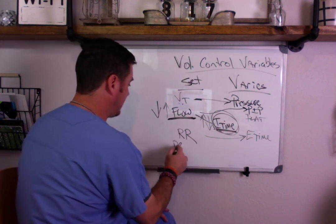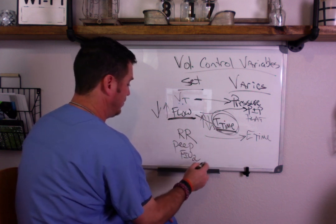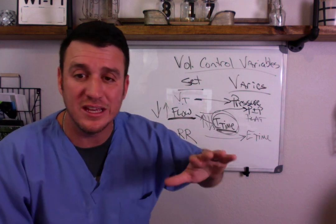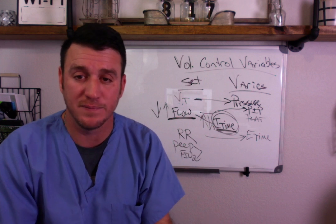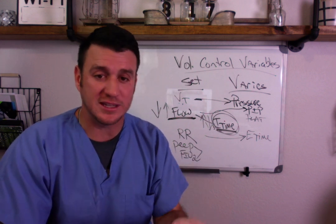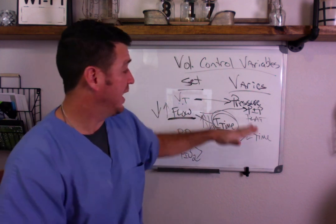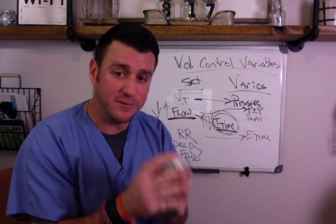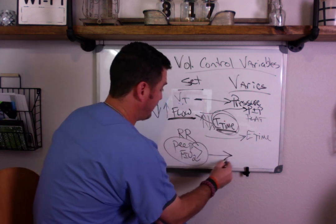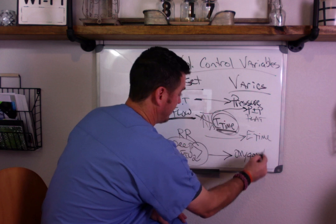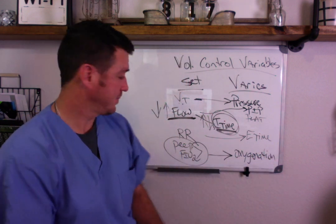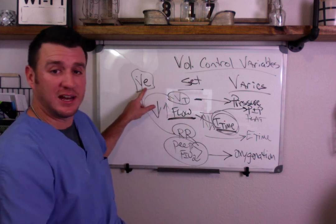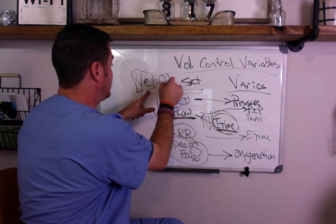We also set PEEP and FIO2. These two things have nothing to do with PIP, plateau, I-time, flow, or E-time. They solely focus on oxygenating our patient. If a patient has an oxygenation problem, address it by increasing PEEP or increasing FIO2. If it becomes serious enough and your PIPs and plateaus are rising, then maybe you need to switch to a pressure control mode of ventilation. In volume control, PEEP and FIO2 affect oxygenation. Your respiratory rate and tidal volume affect minute ventilation, which is responsible for CO2 removal.